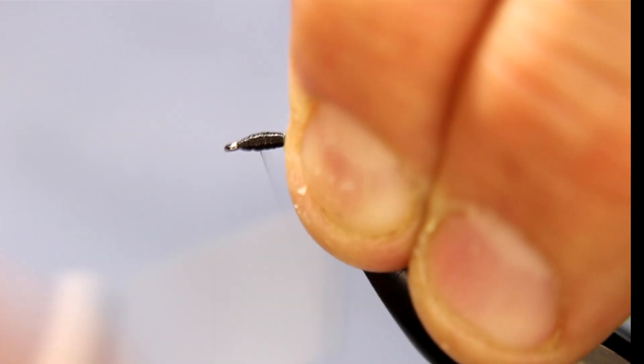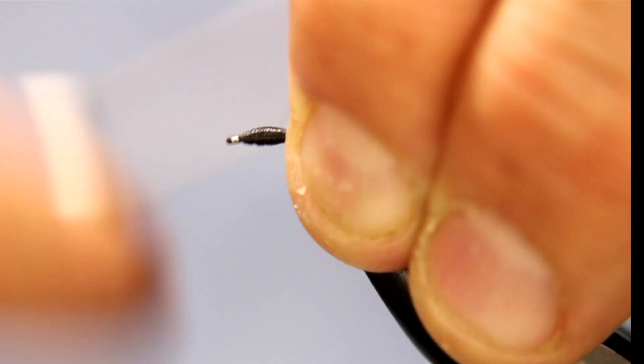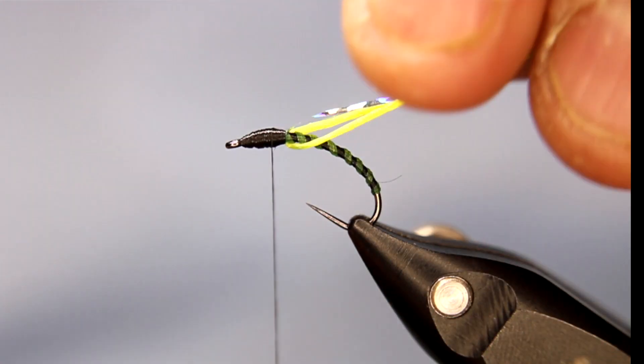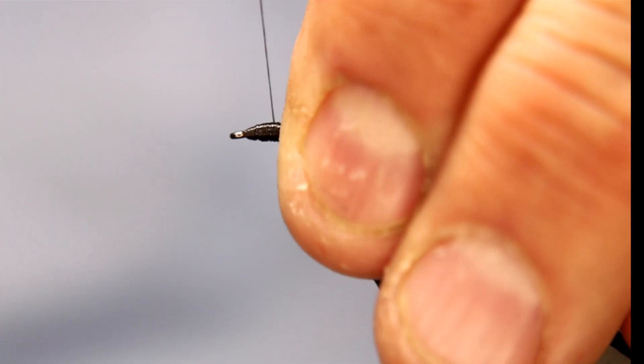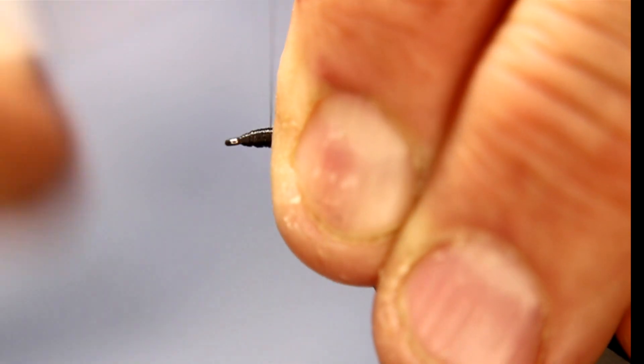So now I'm just gonna build up a bit of a football shape. You definitely want, with these buzzers, you want to definitely have a pronounced thorax section here. It's gonna be, it definitely has to be bigger than the body. So you want that, you want to build this up here a bit. So now I'm gonna come back to the front.